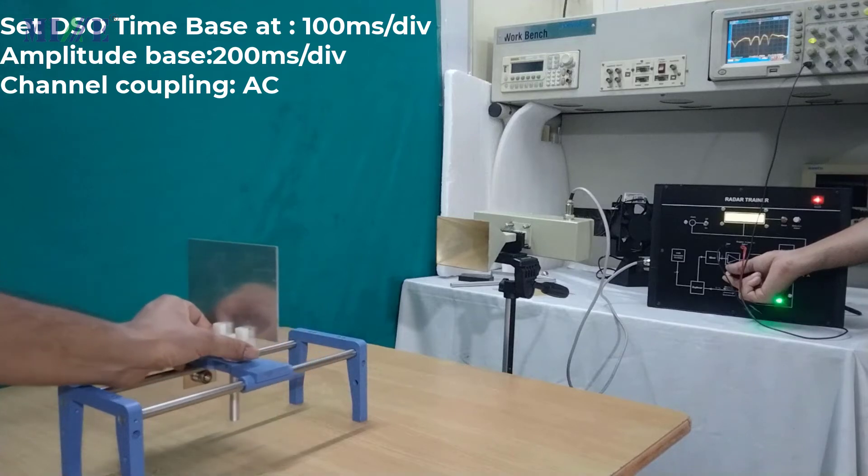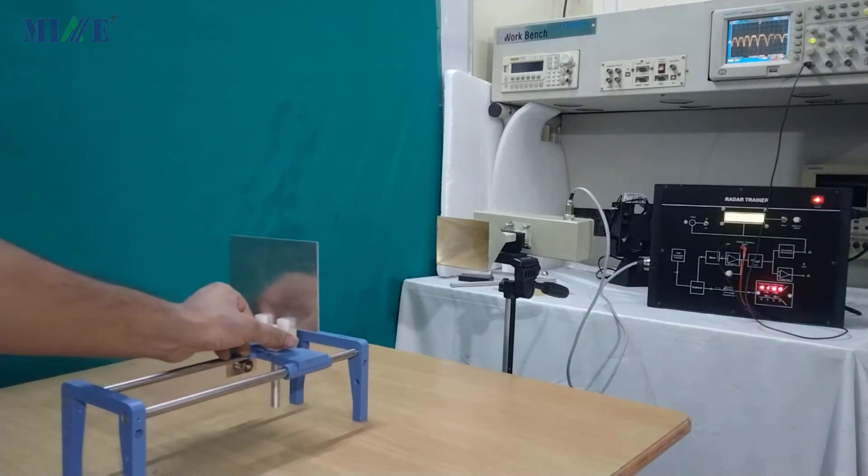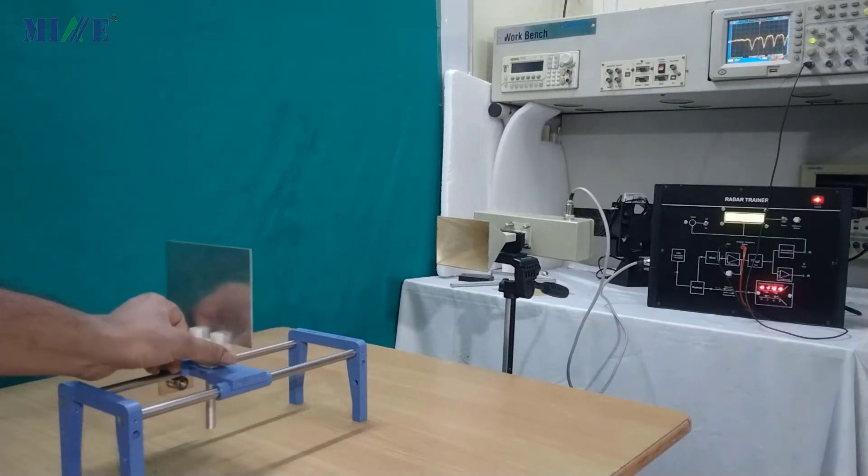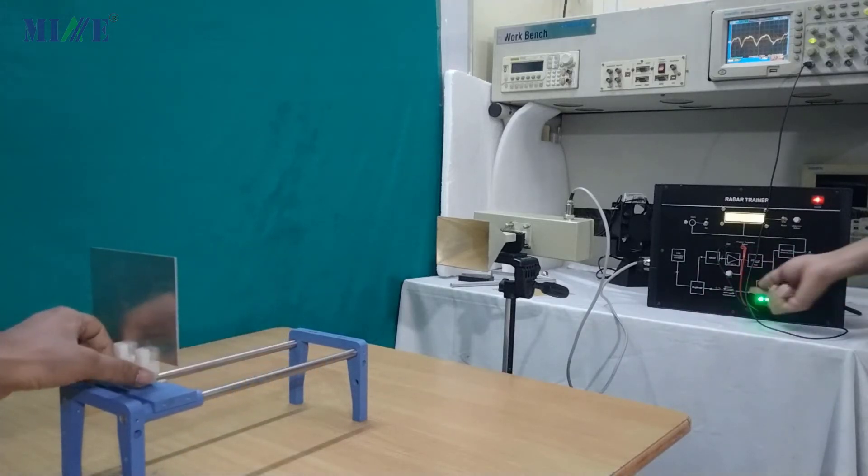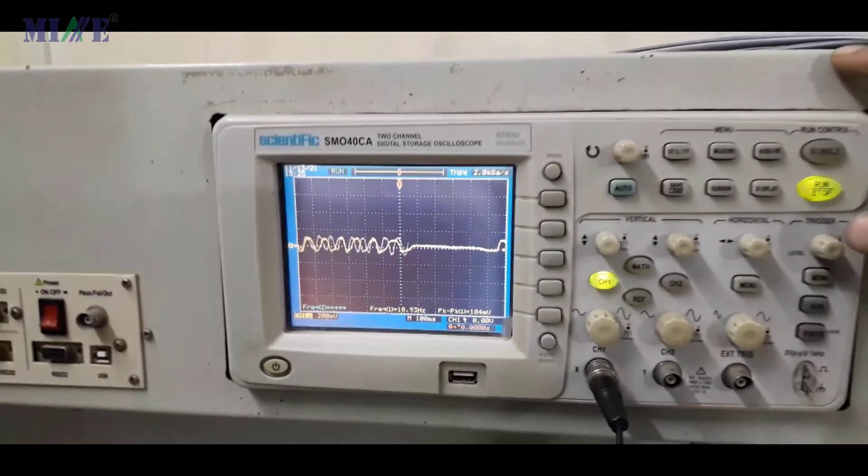Now you will find different frequencies signal on DSO, depends upon speed of object. Now the signals you are receiving are Doppler frequencies.